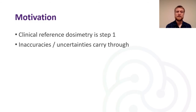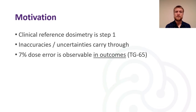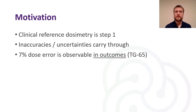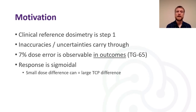We care about this because we want to target the therapeutic window where you have maximum tumour control while minimising adverse reactions in the patient. We also know that a seven percent dose error is observable in patient outcomes directly. This is the TG65 case study where there were 67 gynaecological patients receiving external beam photons of 25 MV energy, and many of these patients had adverse skin reactions and diarrhoea. The dose response is sigmoidal, so a small change in dose can cause a large change in tumour control probability or an increase in adverse effects. Of course this is site and stage dependent.